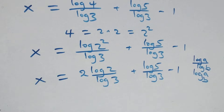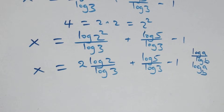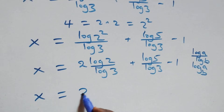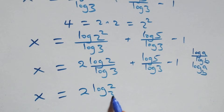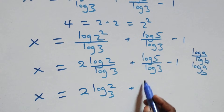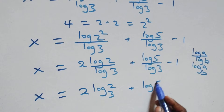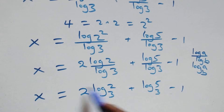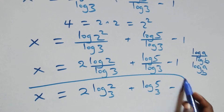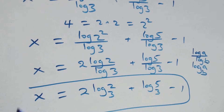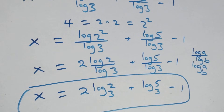Applying the change of base and power rules, what we have here becomes x equals to 2 log 2 base 3 plus log 5 base 3 minus 1. That is, we have the value of x in this problem.